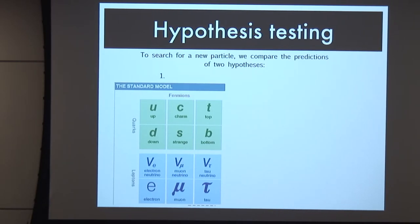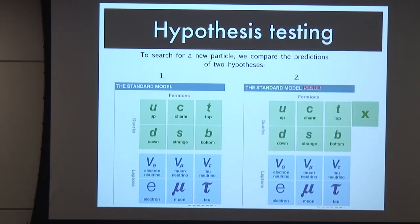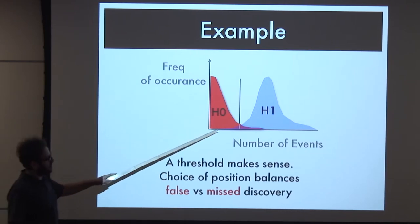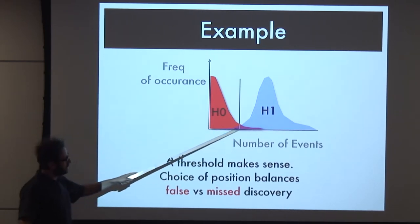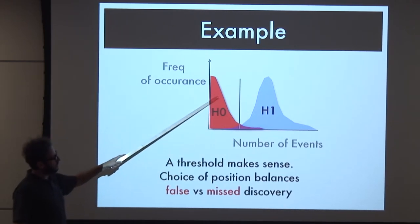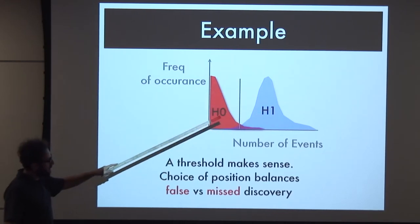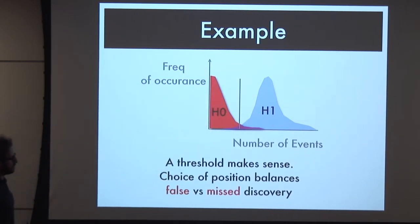As I described in the last few lectures, essentially what we're doing is a hypothesis test. We're asking nature which of these two models it prefers - standard model or standard model plus X. In the case of a single-dimensional analysis, this is pretty straightforward: you have one hypothesis, another hypothesis, you put a threshold, and you make your decision. No need for deep learning in that circumstance.